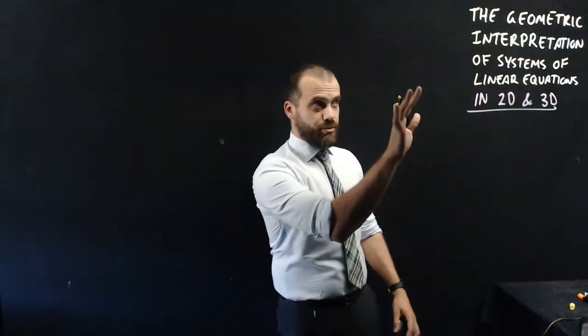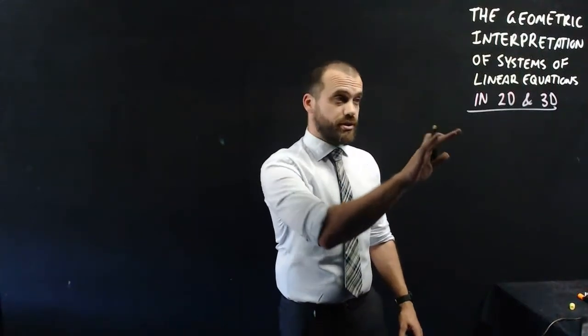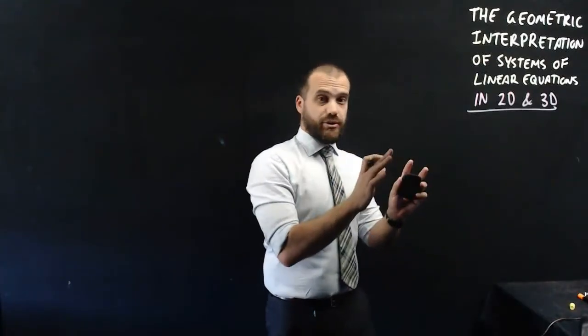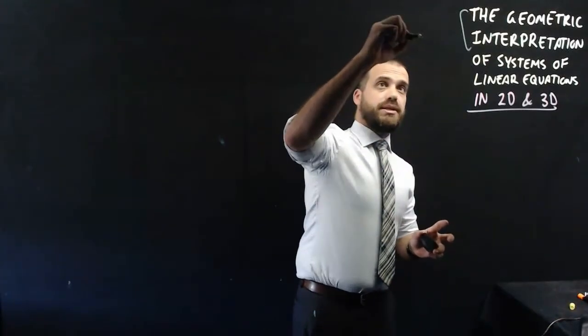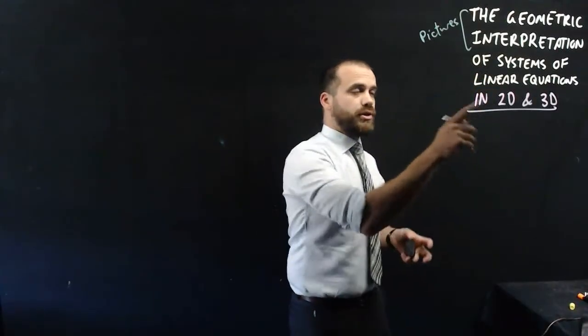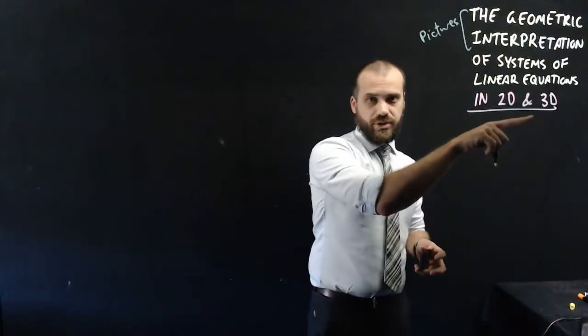In this video we're looking at the geometric interpretation of systems of linear equations in two dimensions and three dimensions. That is a long and scary looking title, but really it just means pictures of systems, of groups, of linear equations in two dimensions and three dimensions.